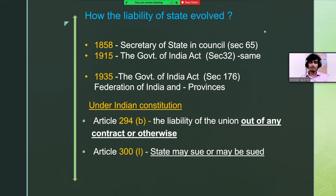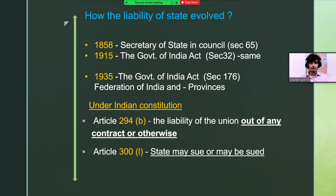Now let's analyze how the liability of state evolved in India. Before the independence of 1947, through the Government of India Acts of 1858 and 1950, it was the Secretary of State who was named in the various state liability cases. Further, in 1935, it was the Federation of India and the Provinces who were being named in the state liability cases. After the independence of 1947, under the Indian Constitution, under Article 294(b), the liability of the union out of any contract or otherwise is discussed. The word 'otherwise' here is very important because it includes the various tortious liabilities of the state.